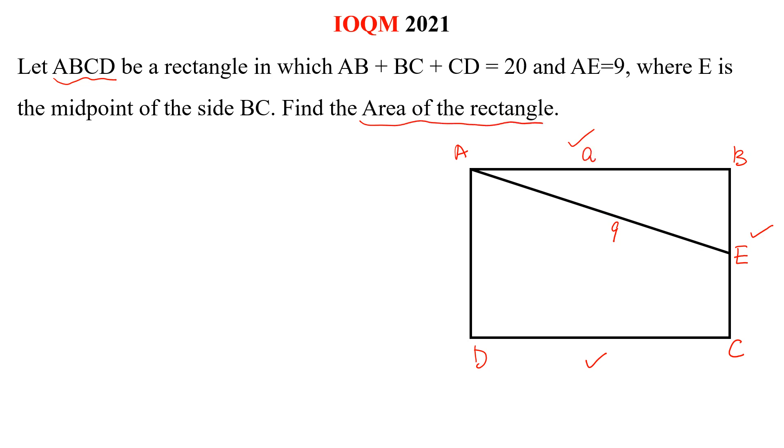Let this length is E and this is B. This will be also B because E is the midpoint. And this length will be 2B and this is also A.